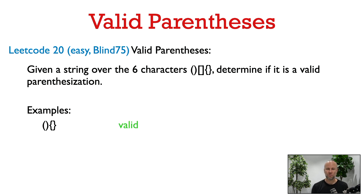Let's look at some examples to see what that means. Here's an example of a valid parenthesization. It's the concatenation of two valid parenthesizations, each one just being an opening symbol followed by the closing symbol of the same type.